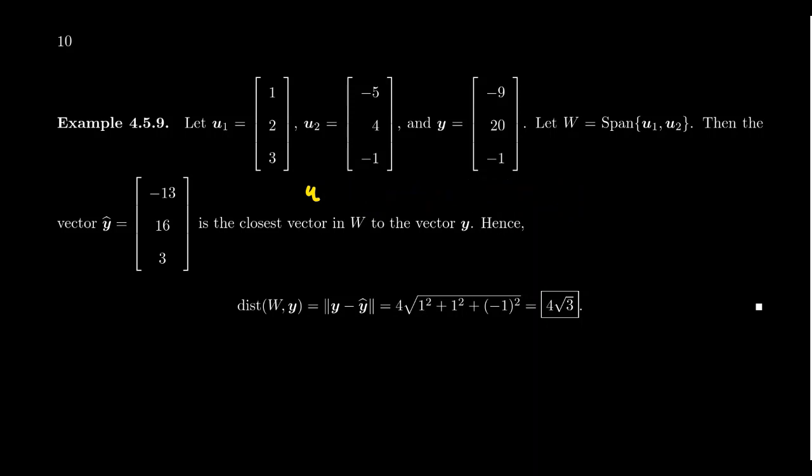And so then we showed in a previous video that if you take the vector y, that its orthogonal projection onto W is going to be this vector right here, [-13, 16, 3]. Therefore, the distance between y and the space, the plane W, is going to be the distance between the plane and the vector, the distance between y and its orthogonal projection.